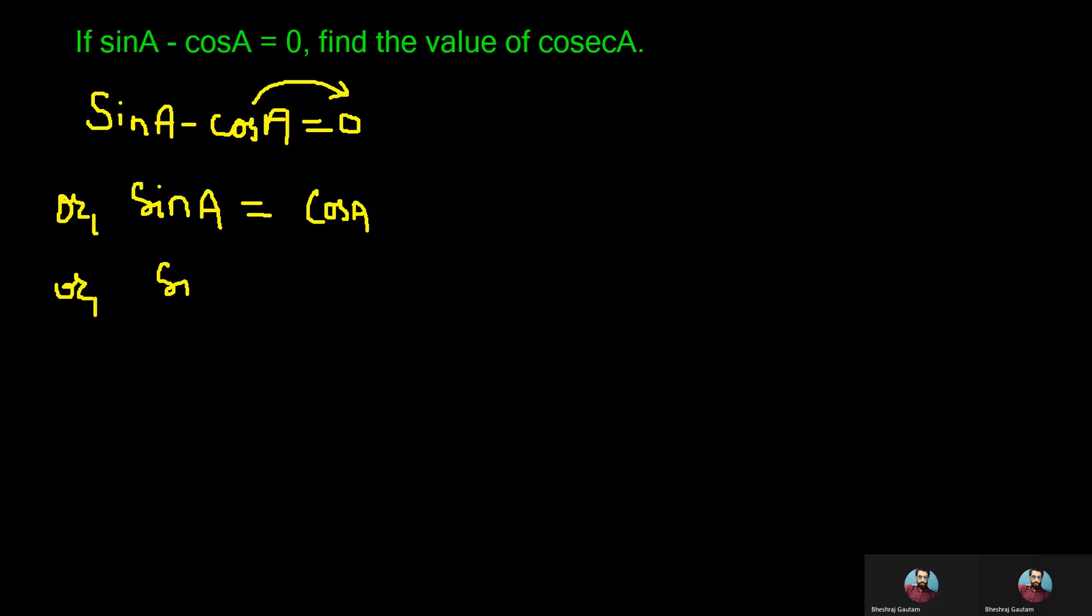Now let's divide both left side and right side by cosA which can be now written as sinA by cosA is equal to cosA by cosA. Now we can express the left side sinA by cosA in the form of tan as tanA, and on the right side cosA and cosA gets cancelled and then we get the remaining as 1.